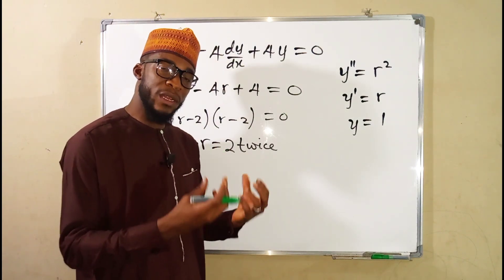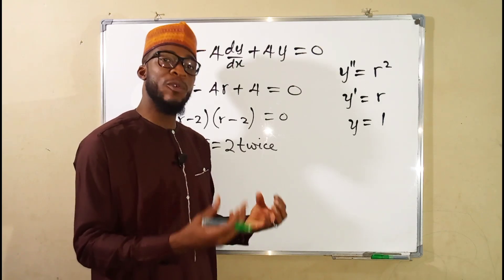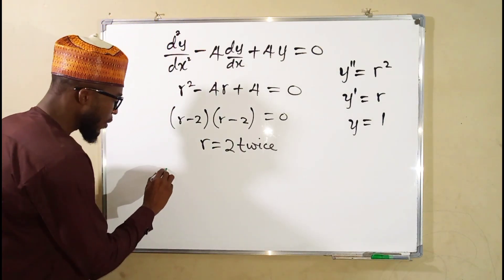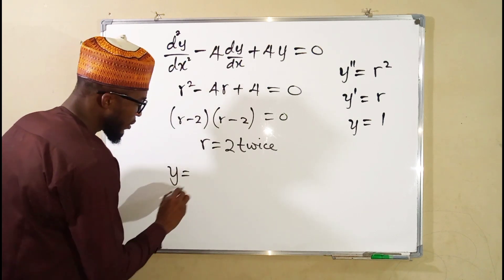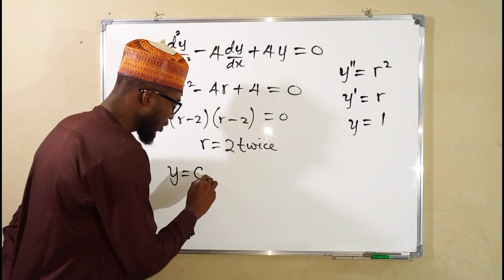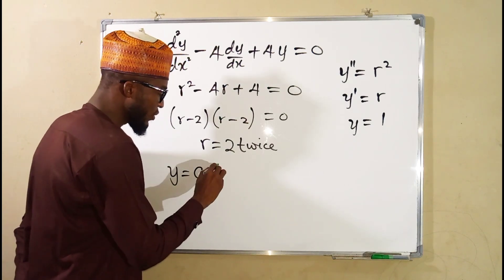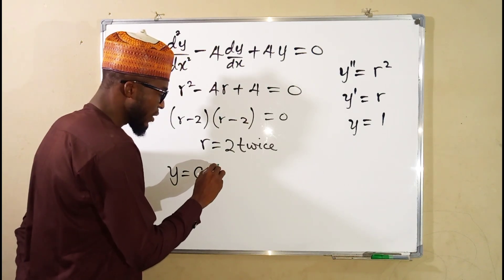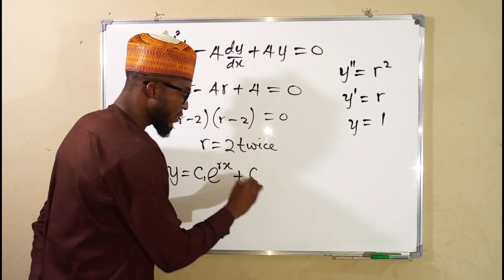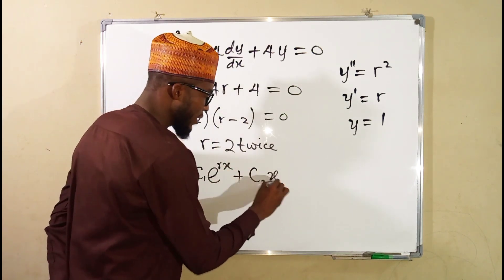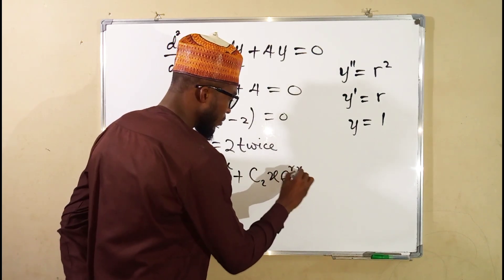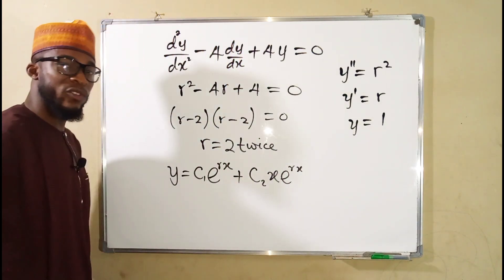If we obtain real and equal roots, the general form of our solution is y equals c₁ times e to the root times x, plus c₂ times x times e to the root times x.